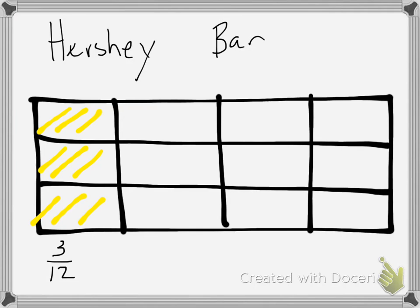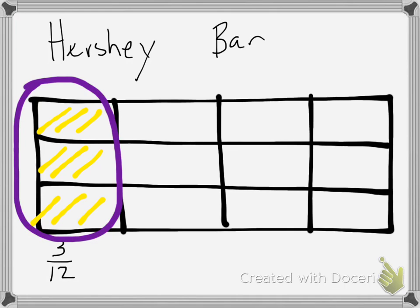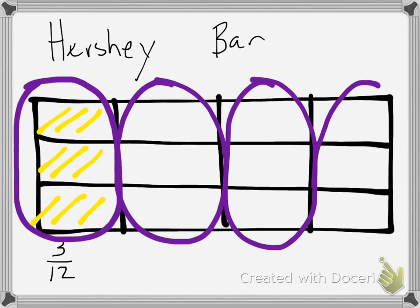However, this is not in simplest form. The simplest form, or lowest terms way to think about it, would be to say, well, really, I'm giving my friend this whole chunk of my Hershey bar. How many chunks are there that are like that? There's one. There's another. There's another. And there's another. So really, there are four whole chunks, and I gave my friend one of them. So my friend got one out of the four. These fractions are equal. These are equivalent.